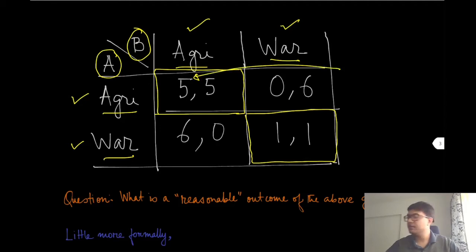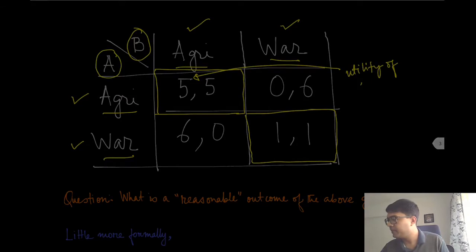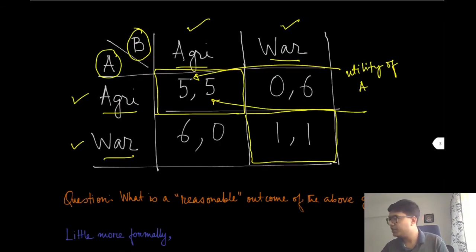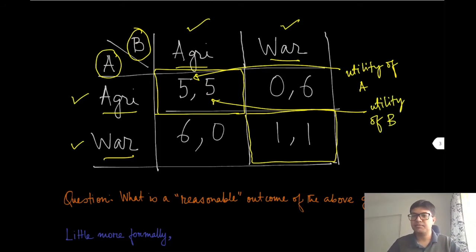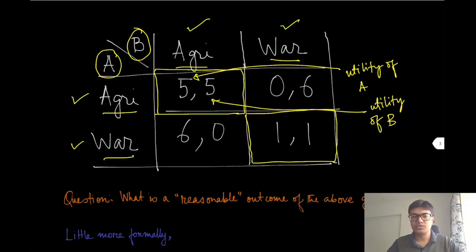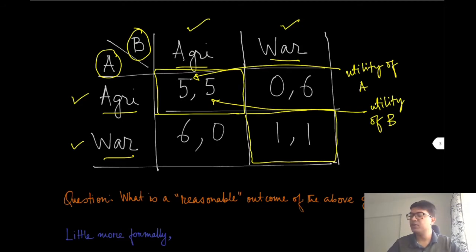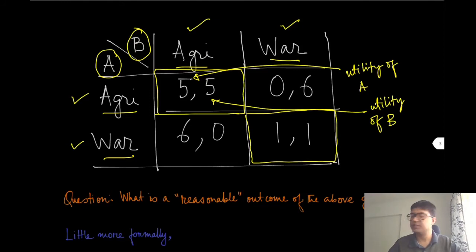In each box, the first number represents the utility or payoff of the first player, player A, and the second number represents the utility of the second player, player B. When both players choose war, there is no agricultural produce since neither invested in agriculture. They can only attack each other, but since both have invested in war, both can defend themselves. They get some payoff — they save some resources — but much less than if they had invested in agriculture, so that is represented as one and one.